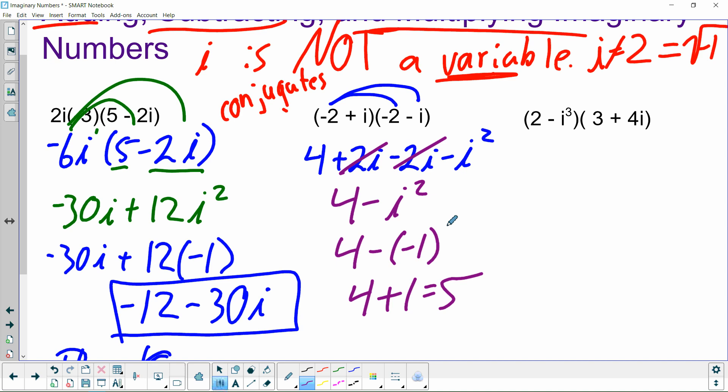Alright, one more example. Oops, I can't slide, alright. So, same thing, it's just not going to be a conjugate this time. So, we're going to FOIL, or we're going to distribute. So, 2 times 3 is 6, 2 times 4i is 8i, negative i cubed times 3 is negative 3i cubed, and then negative 4i cubed times 4i is negative 4i to the fourth.